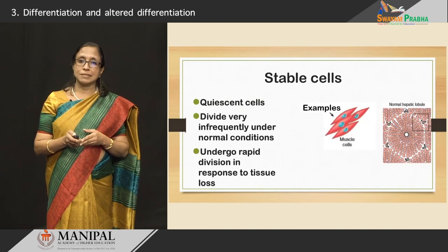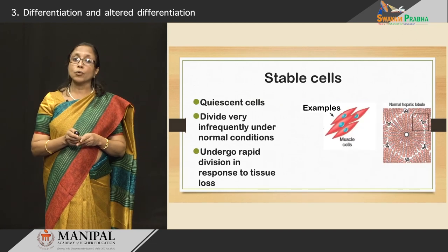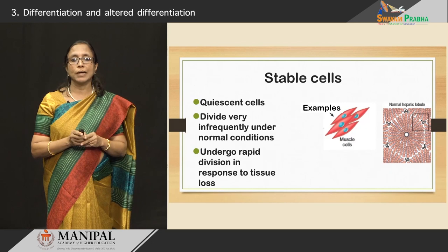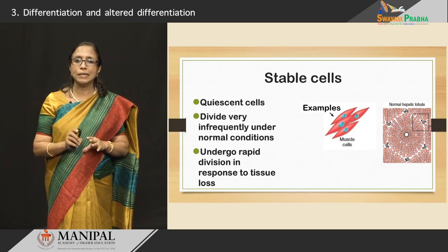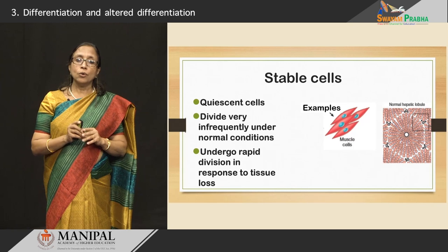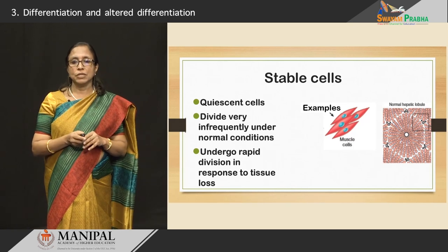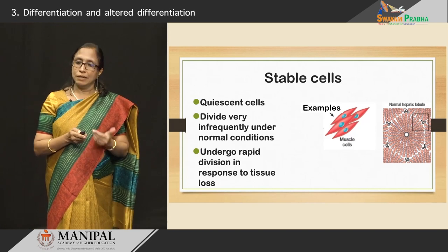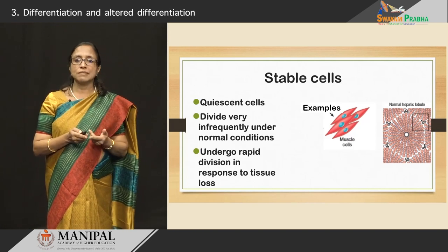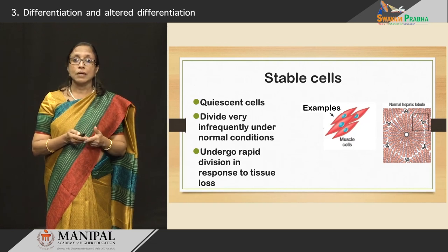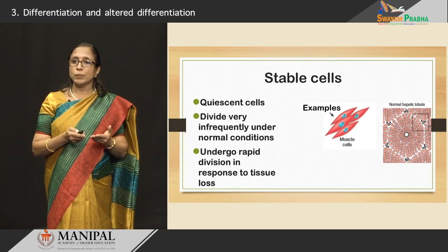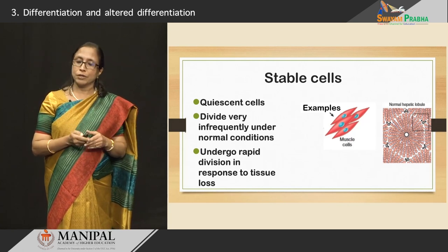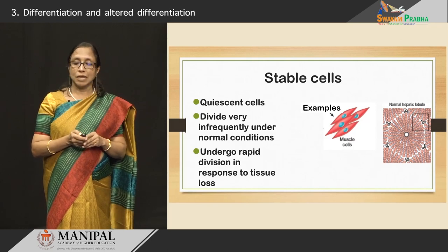The next type are the stable cells. Stable cells are quiescent cells — they divide very infrequently under normal conditions, but they go on to rapid division when there is cell injury or cell loss. Examples include the liver cells, kidney tubular cells, muscle cells, fibroblasts, and bone. When we look at a fracture, the bone heals and unites together because they are stable cells.